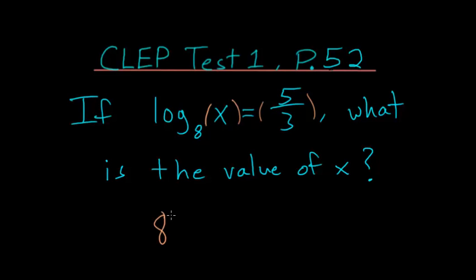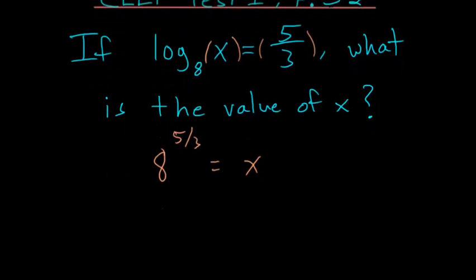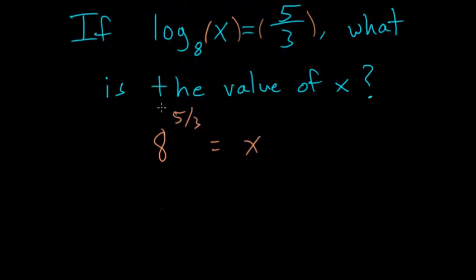So in other words, 8 to the 5 thirds is equal to x. And remember that with fractional exponents, the numerator is the power that you raise the base to, and the denominator is the root you take of the base.